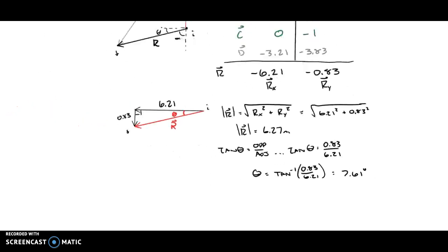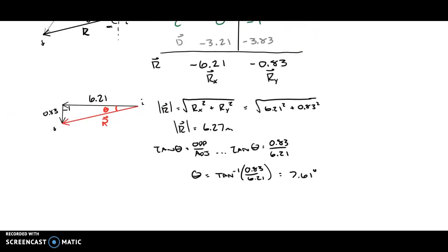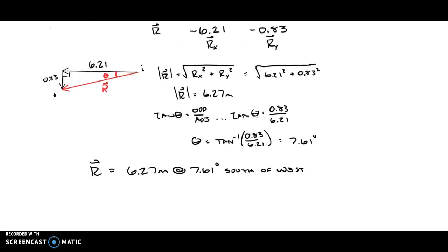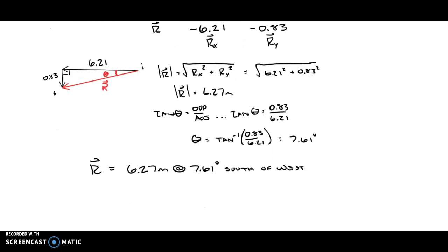Now, I'm not done there. All I know is the magnitude and an angle, but I need to actually tell you what R is. So R, the resultant, would be a displacement of 6.27 meters at an angle of 7.61 degrees. And that angle is measured, if you would, to measure that angle, you would point west and go south of west. So I'm going to say this is south of west. I could also say it's counterclockwise from west is another reference.